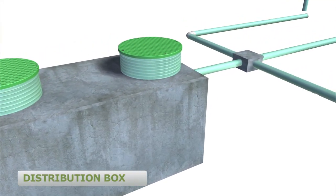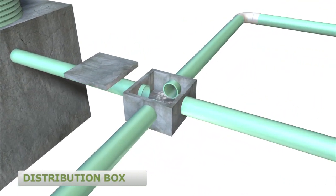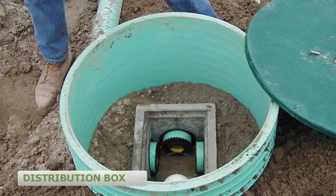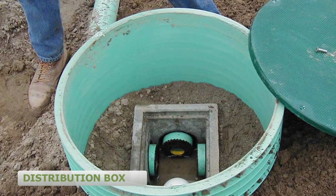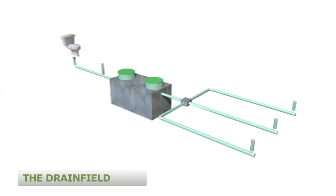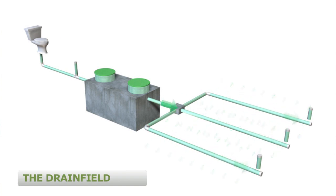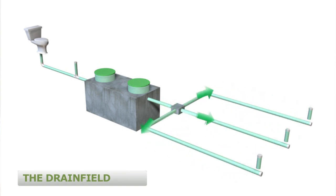Typically, gravity systems will utilize a distribution box, or D-box, to equally distribute the effluent into each lateral pipe in the drain field. Equal distribution of the wastewater into each lateral is critical to the long-term operation of the drain field. Once the effluent reaches the laterals, it flows out of small holes and into the surrounding soil, where aerobic or oxygen-loving bacteria and other microbes treat the wastewater by removing pathogens.